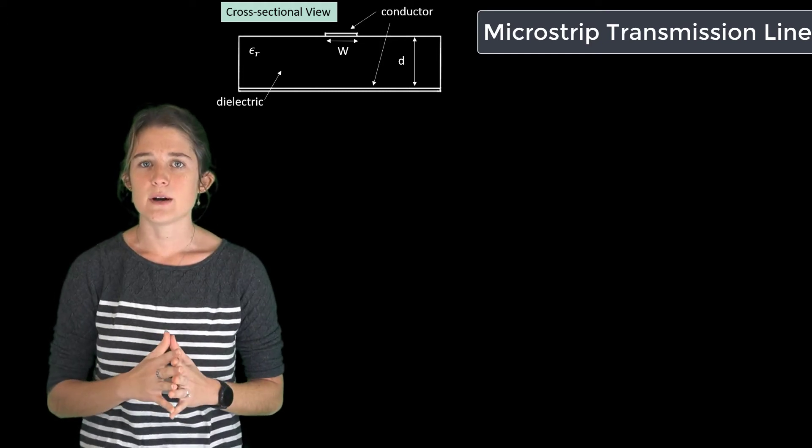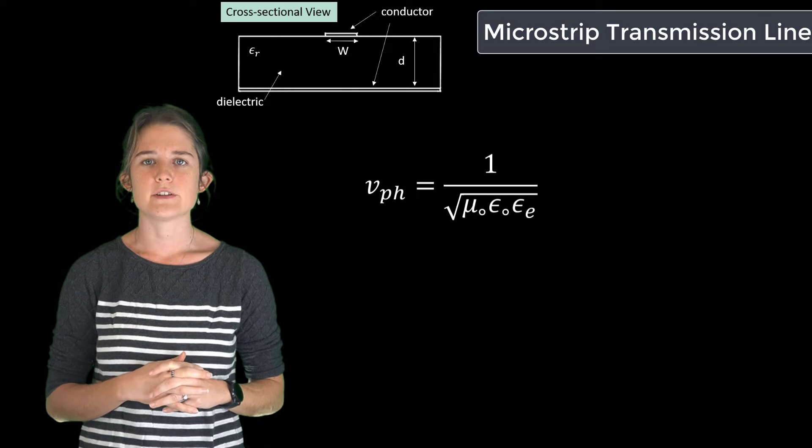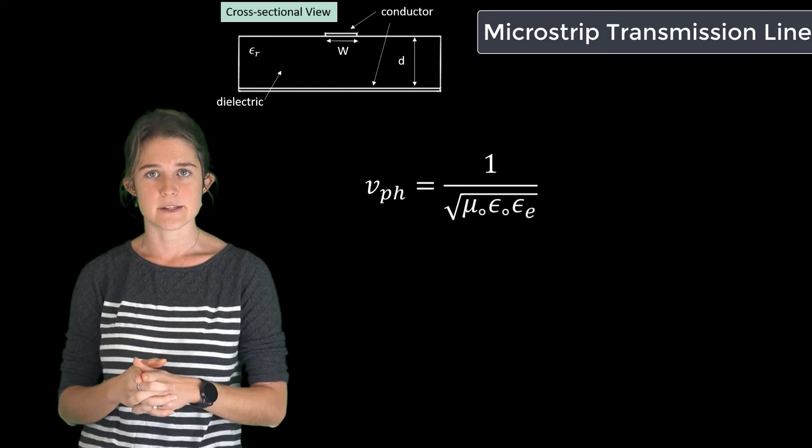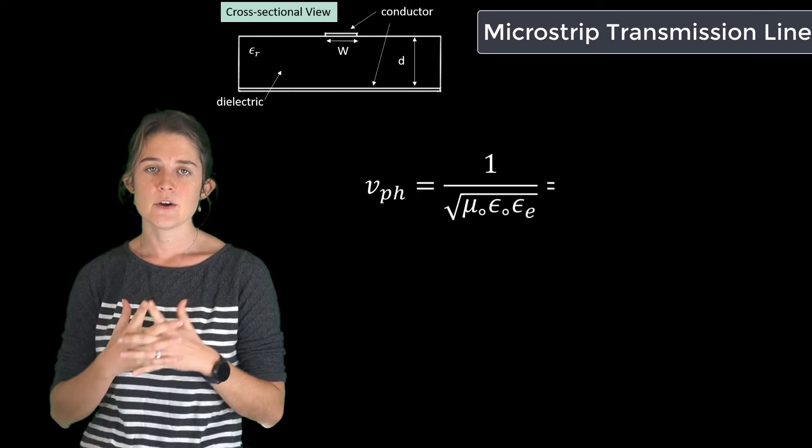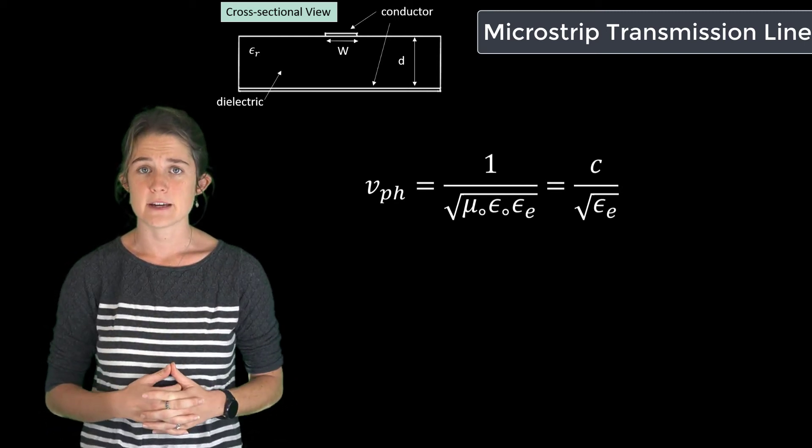The phase velocity of the quasi-TEM wave guided by this transmission line is equal to 1 over the square root of mu naught epsilon naught epsilon e, or it's equal to the speed of light in a vacuum divided by the square root of the effective permittivity.